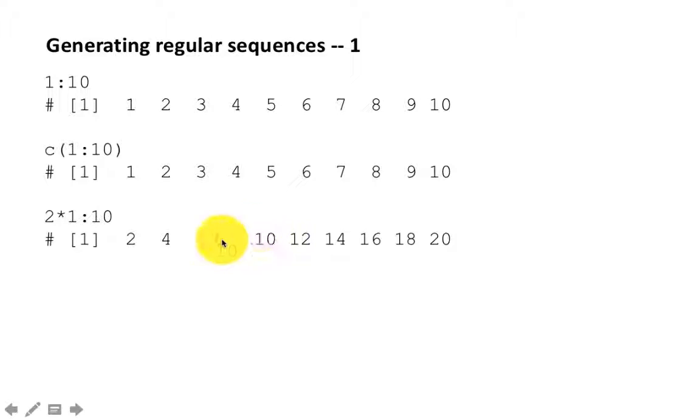If you try it out, you would have seen that the result looks like this. So clearly, what happened was that it first generated the sequence 1 to 10, and then it multiplied by 2.